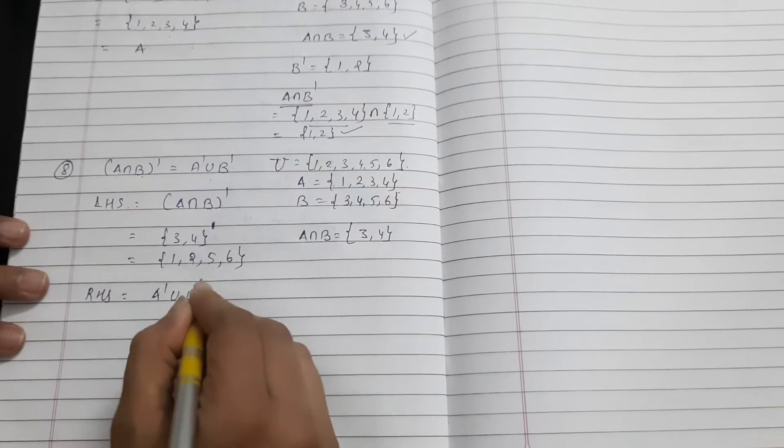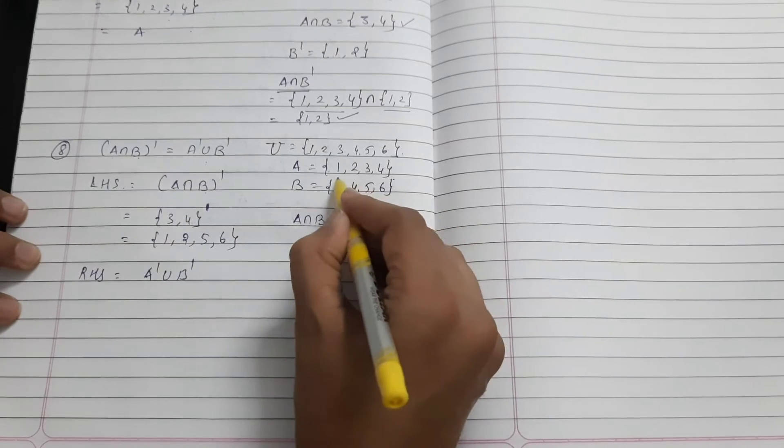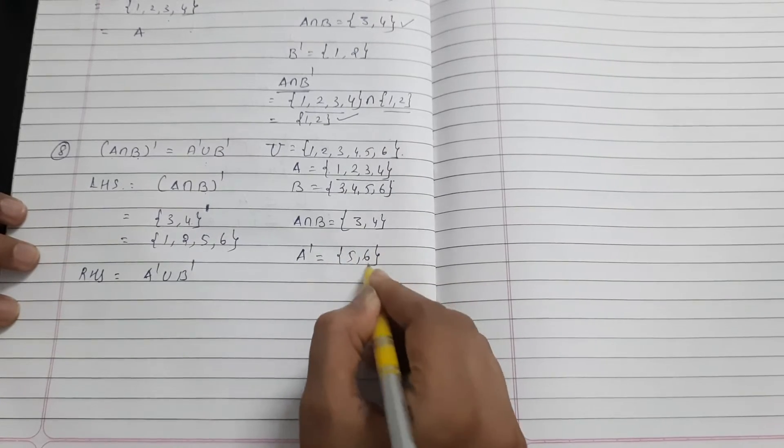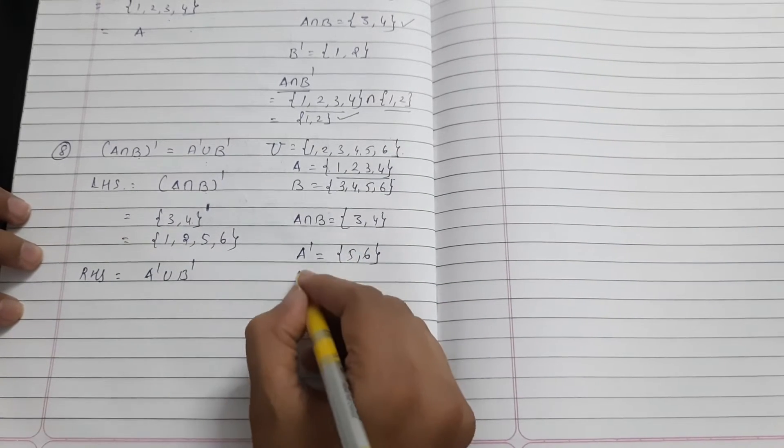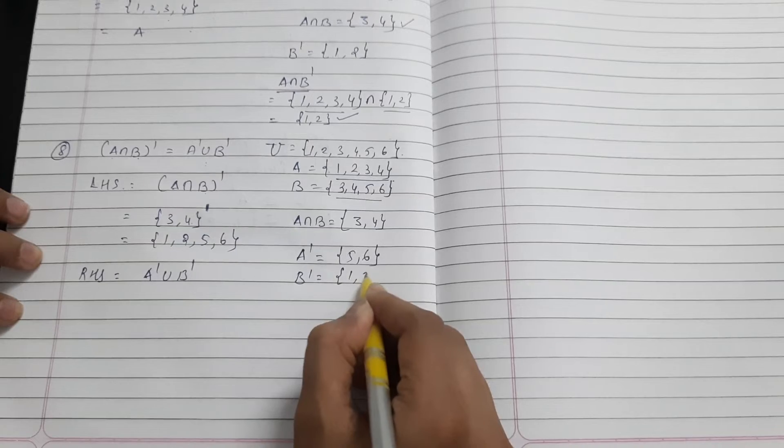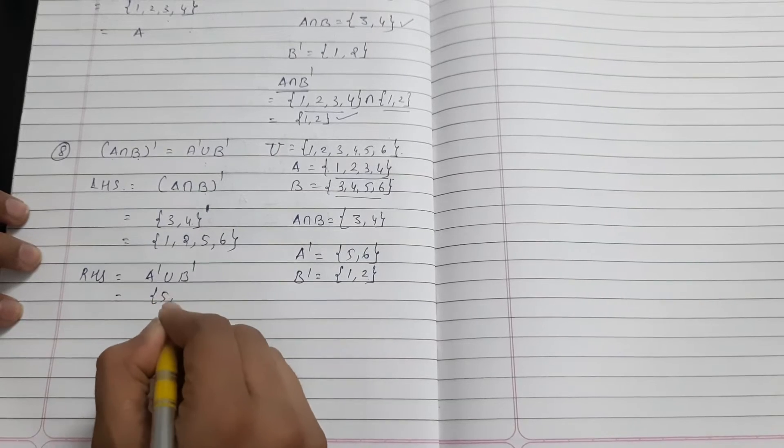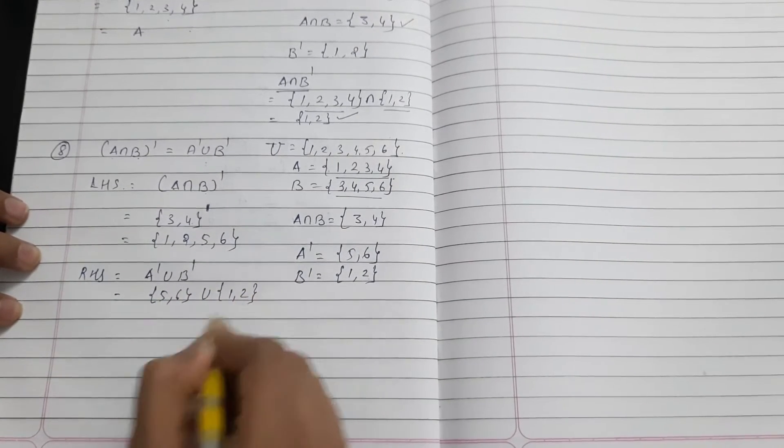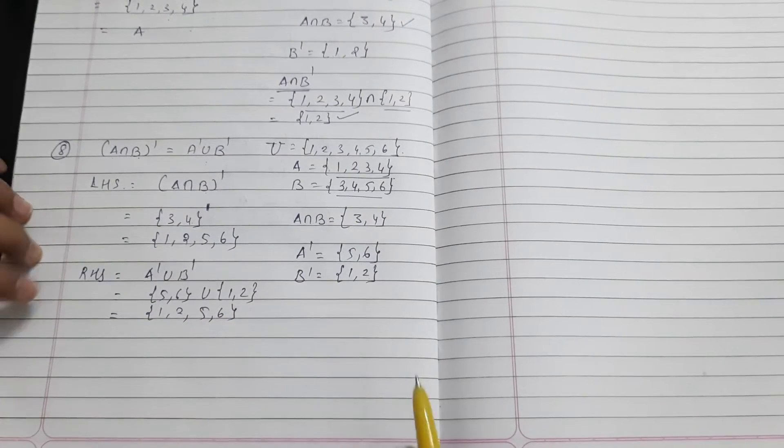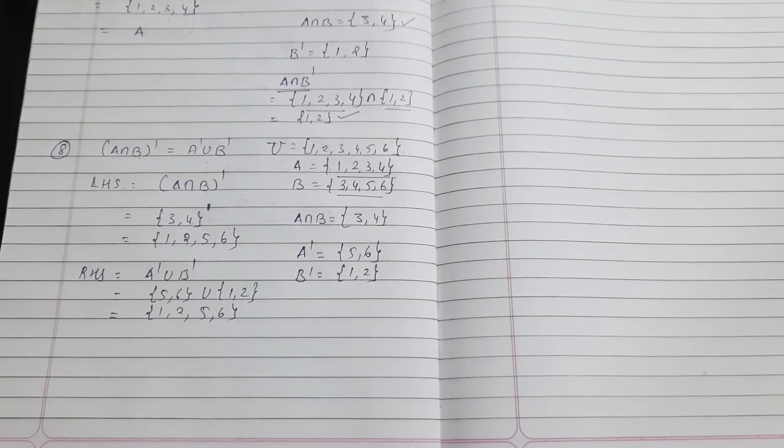Now right hand side, that is equal to A dash union B dash. A dash means elements not in set A but in universal set U. Those are 5, 6. B dash means elements not in B, that is 1, 2. Now we need union of A dash and B dash. I write A dash union B dash, that is {5, 6} union {1, 2}. Taking their union: {1, 2, 5, 6}. That is exactly equal to left hand side. That means this is true.